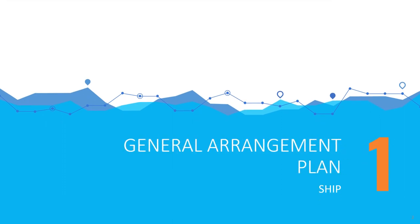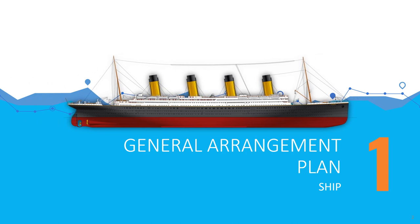So, general arrangement plan of a ship. This ship is the Titanic, but by looking at this ship, you are unable to understand what facilities and equipment the ship is equipped with. The general arrangement plan tells us the facilities and equipment present on each deck of a ship.